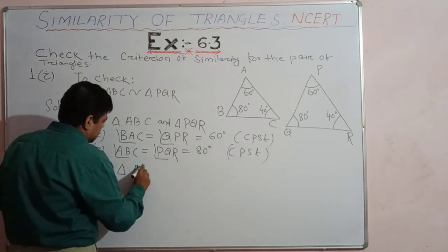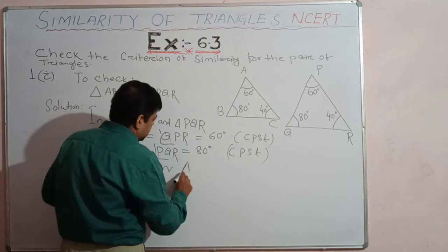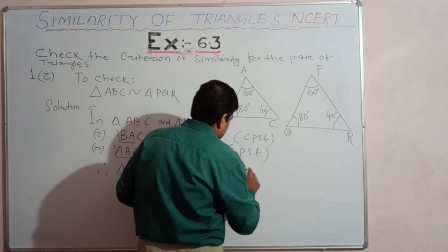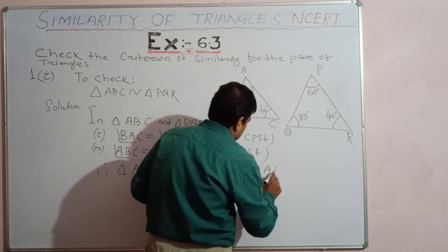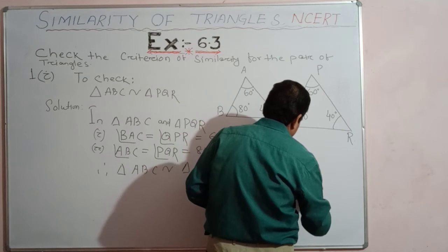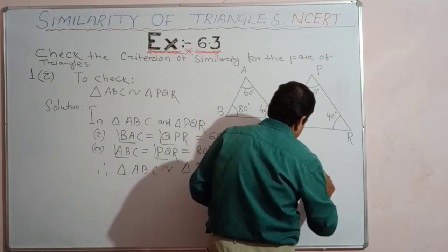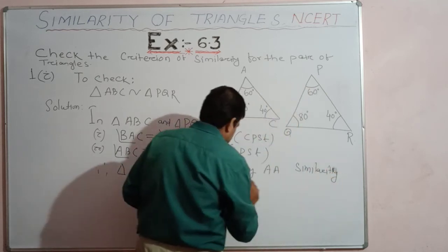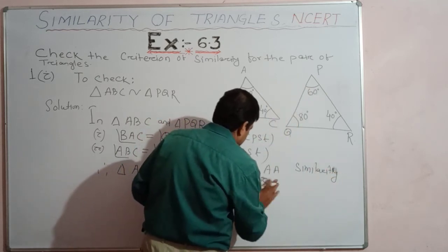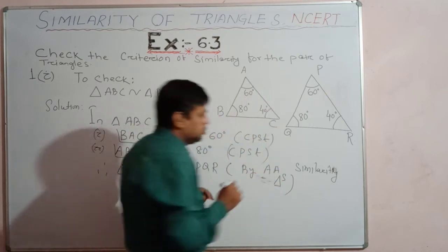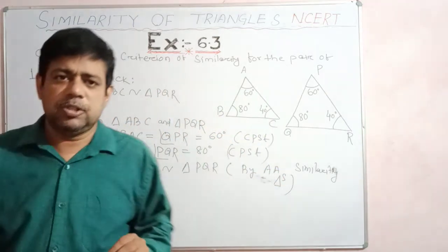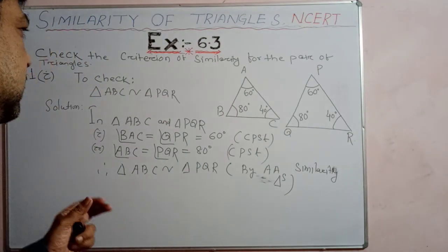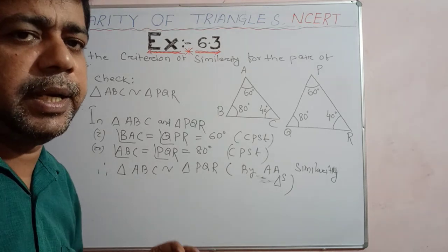Therefore, triangle ABC is similar to triangle PQR by the angle-angle similarity criterion of triangles. This is a simple application: two triangles are similar under the angle-angle criteria because the two corresponding angles are equal.